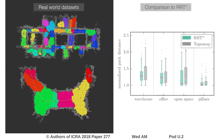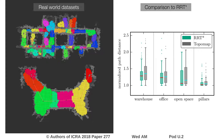We also compared our obtained path lengths to those of RRT* and found that they are very similar, but the computation times on a topological map are orders of magnitude lower than those of RRT*.